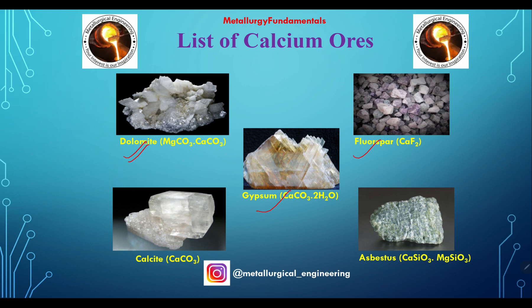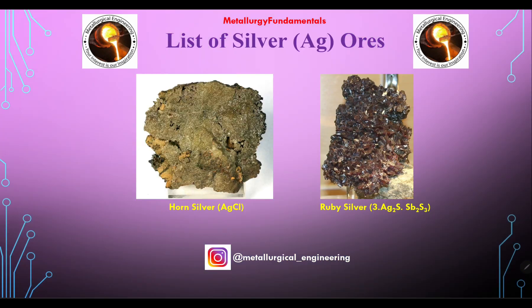Other calcium ores include fluorite, calcite, and asbestos — calcite being the most common. For silver ores, the first is horn silver, AgCl, and the second is ruby silver.